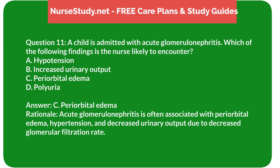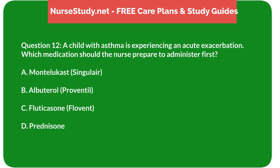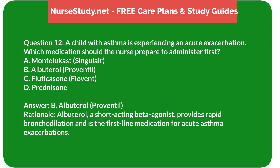Question 12: A child with asthma is experiencing an acute exacerbation. Which medication should the nurse prepare to administer first? A) montelukast (Singulair), B) albuterol (Proventil), C) fluticasone (Flovent), D) prednisone. Answer: B) albuterol (Proventil). Rationale: Albuterol, a short-acting beta agonist, provides rapid bronchodilation and is the first-line medication for acute asthma exacerbations.